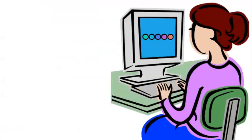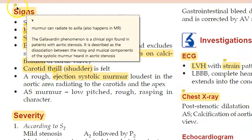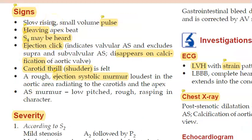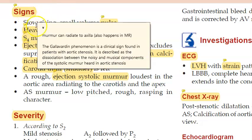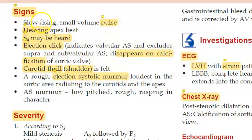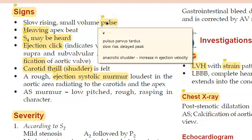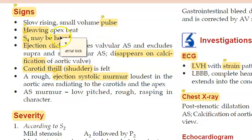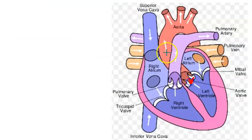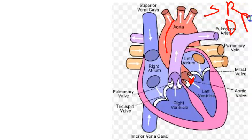How will these people present? They will have dyspnea, syncope, and angina. On signs, the pulse is slow-rising, small volume, with a delayed peak — this is called pulsus parvus et tardus. From the aorta, the blood is not coming easily due to stenosis, so the pulse you feel will be slow-rising with a delayed peak.